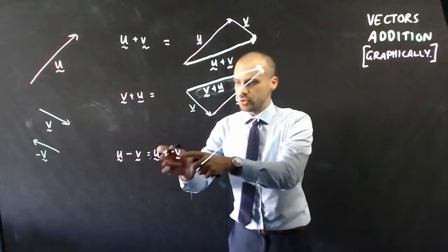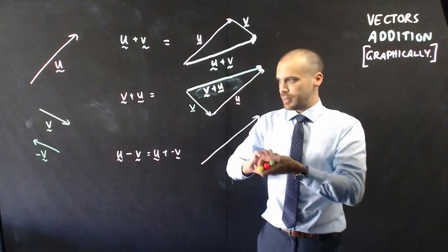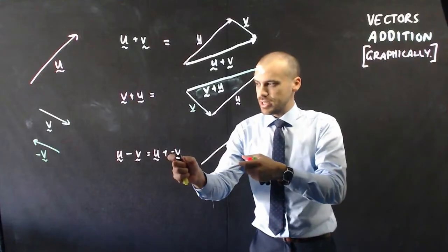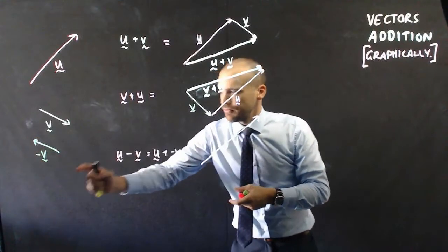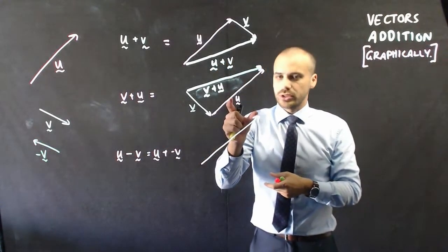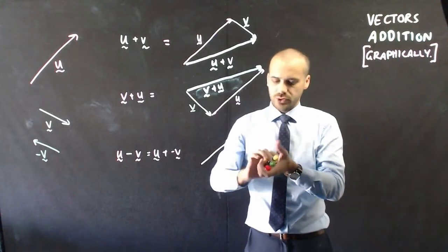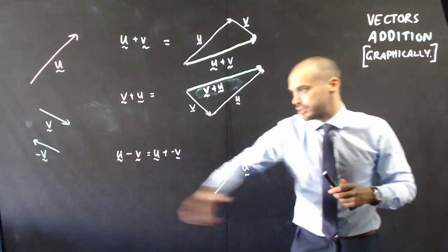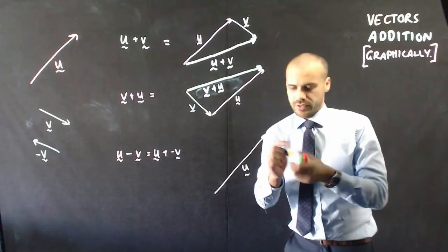Now, because I'm doing u plus negative v, essentially now I can just take negative v, which looks like that, and join it onto there. Unfortunately, I haven't left myself a lot of space. Okay, so taking negative v, moving it over to here.